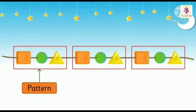Now let's see some more examples. In the first box, it is given square, then circle, then triangle. Again it is repeated: square, circle, triangle. And again it is repeated: square, circle, triangle. This is called a Pattern.